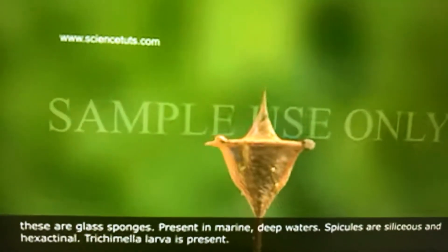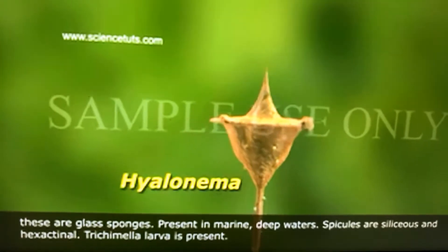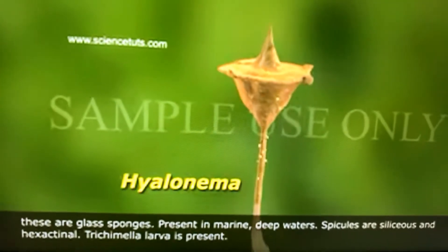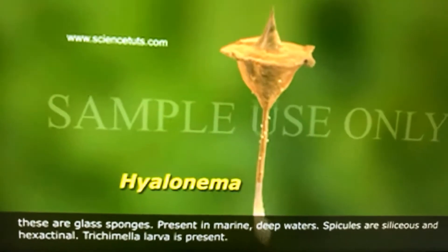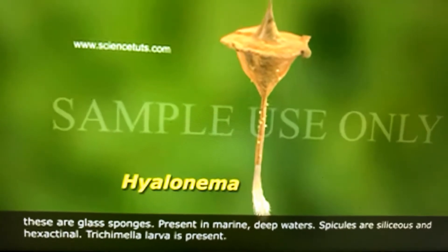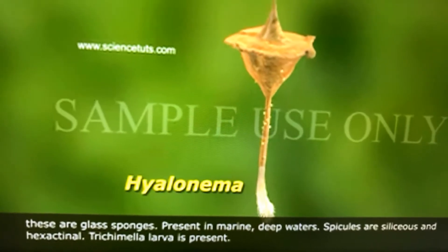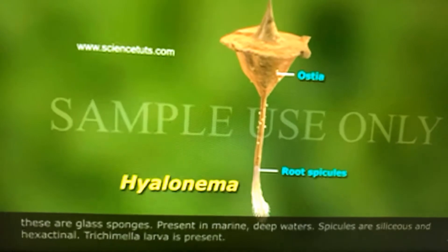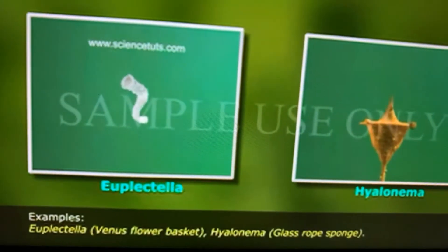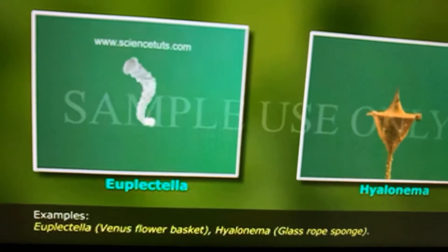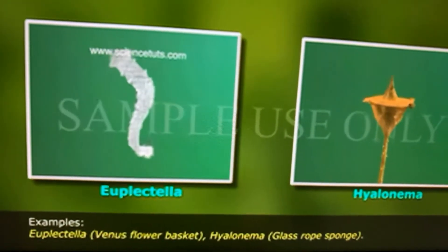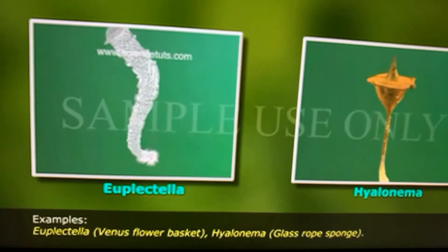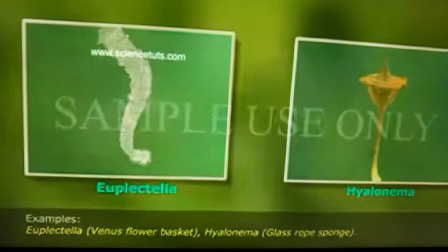Hexactinelida are glass sponges, present in marine deep waters. Spicules are siliceous and hexactinel, meaning six-rayed spicules are present. Trichimella larvae is present. Examples are Euplectella, which is called Venus flower basket, and Hyalonema, the glass rope sponge.